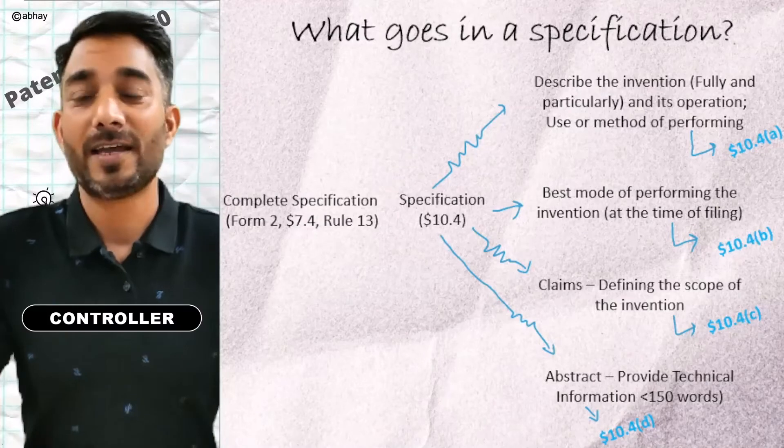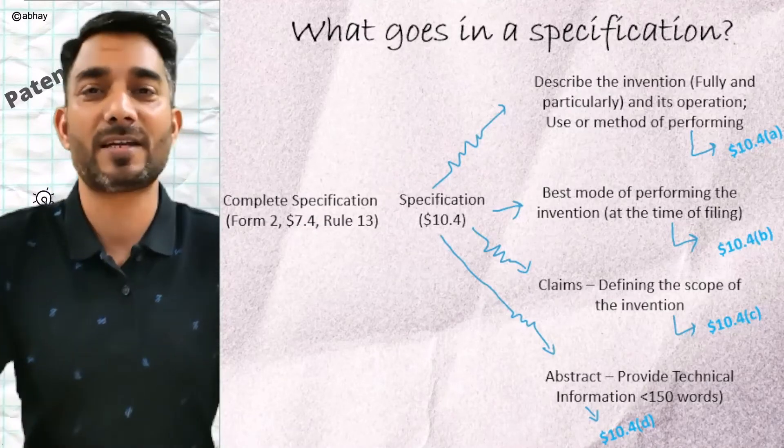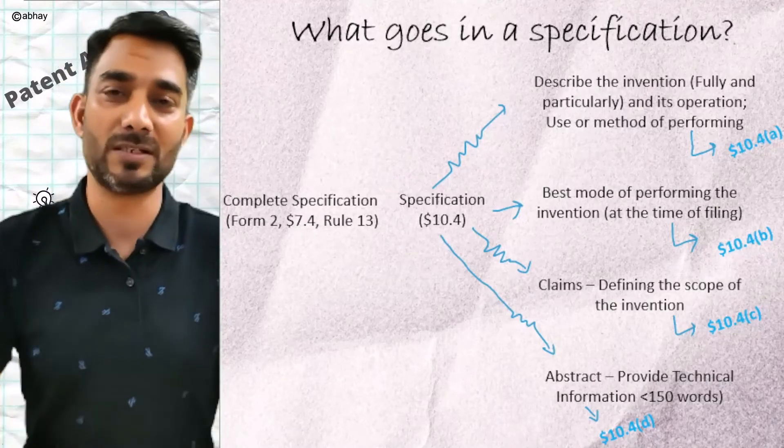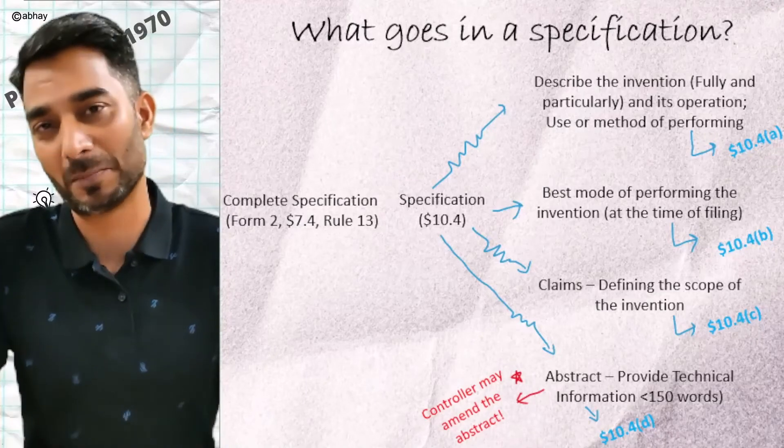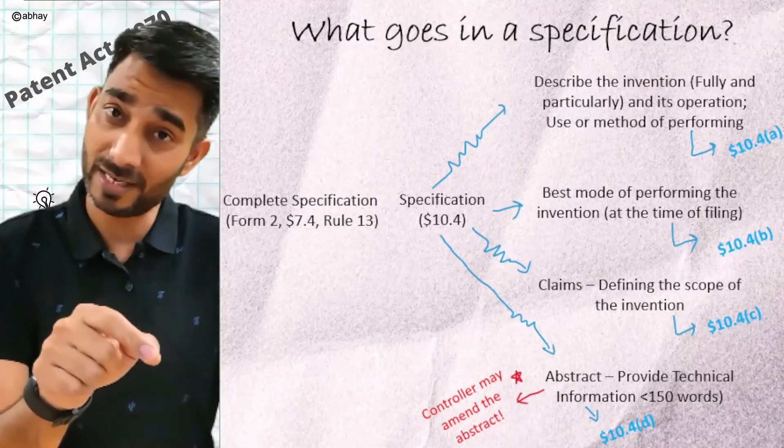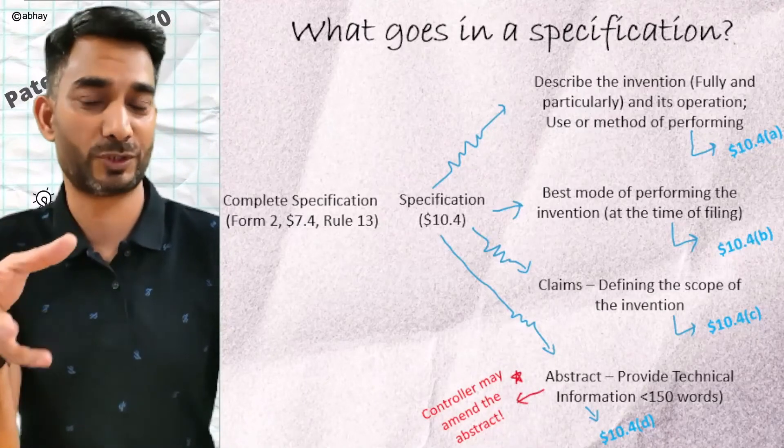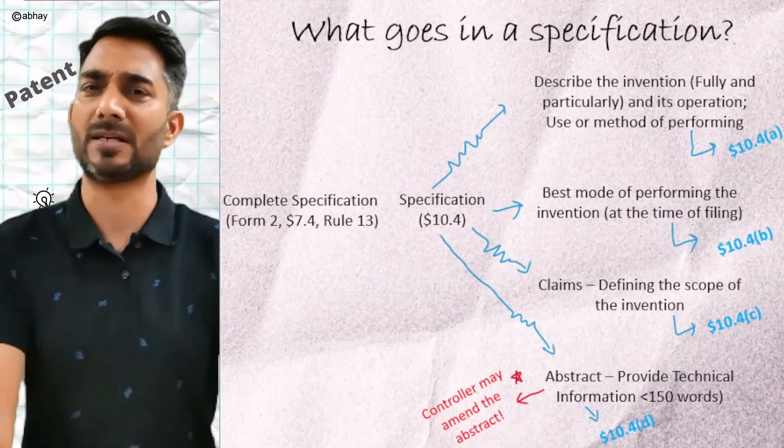Section 10.4 states that an examiner can amend your abstract if it doesn't do justice to the requirement. Every abstract is associated with a figure or diagram for better understanding.